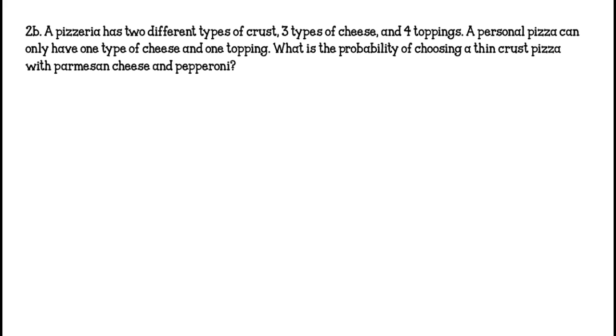A pizzeria has two different types of crusts, three types of cheeses, and four toppings. So we're going to first find the total number of outcomes. So there are two types of crusts, three types of cheese, and four types of toppings. So 2 times 3 is 6, 6 times 4 is 24.